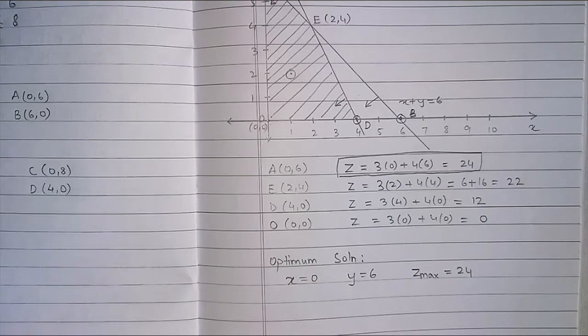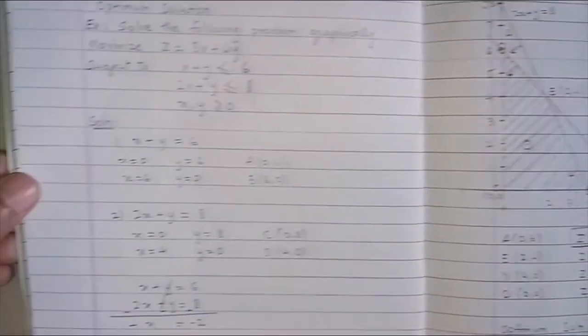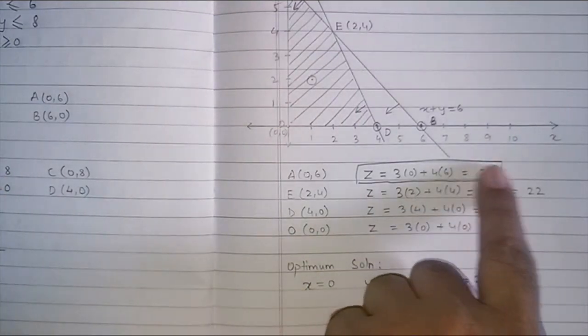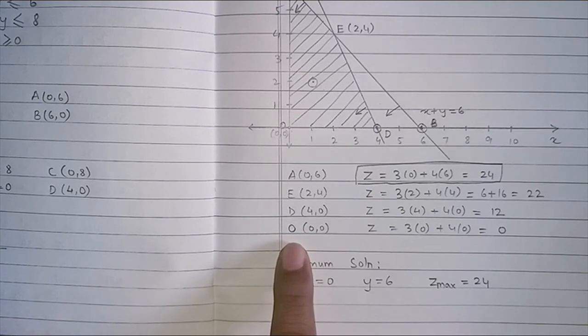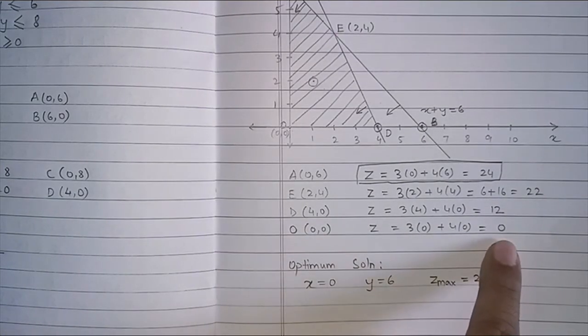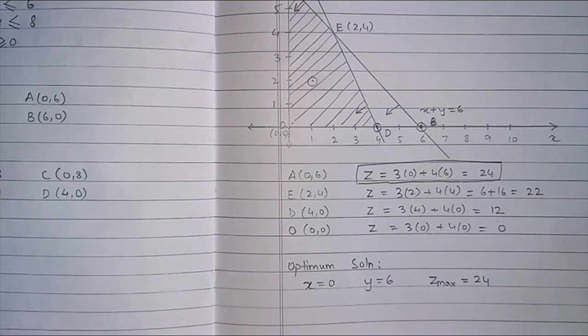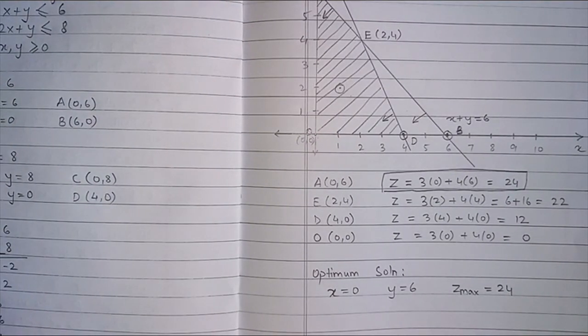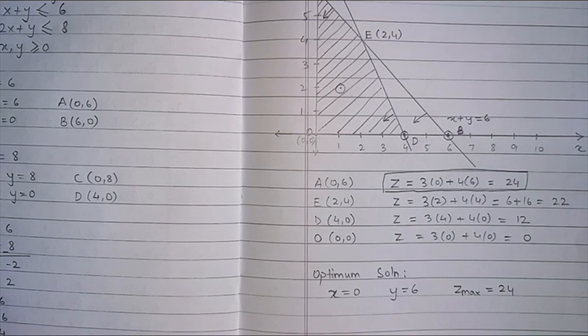This is how we find the solution. Had we got a minimization problem and we are supposed to find the minimum value, then we can use the same method, the equations and everything is the same here. The only thing that is going to change here, we have to consider the minimum value and the minimum value is coming at the origin. So, the value of X and Y will be 0 and 0 and Z min will be 0. I hope you have understood this was a very simple graphical method where we had only two lines. Going further, we are going to see some more complicated problems and try to solve it using the graphical method. Thank you.